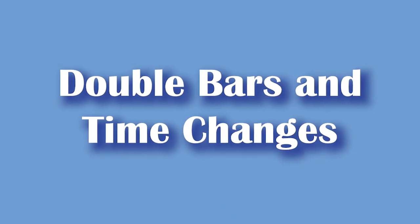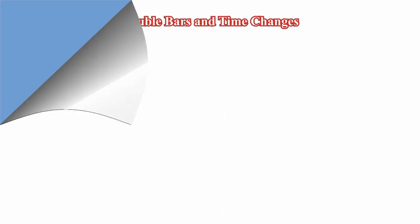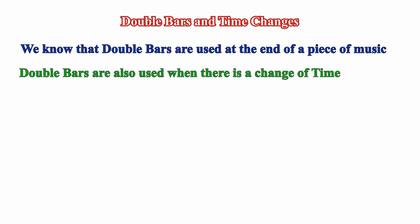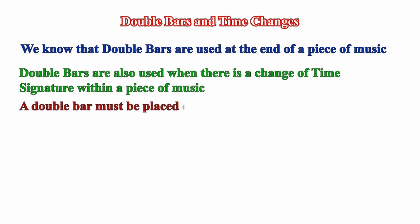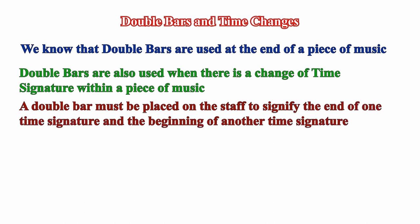Double bars and time changes. We learned earlier that the double bar is used at the end of a piece of music. Another use of the double bar is considered here: sometimes the composer may want to change the time signature within a piece. Just before the time signature is changed, a double bar must be placed on the staff to signify the end of one time signature and the beginning of another.